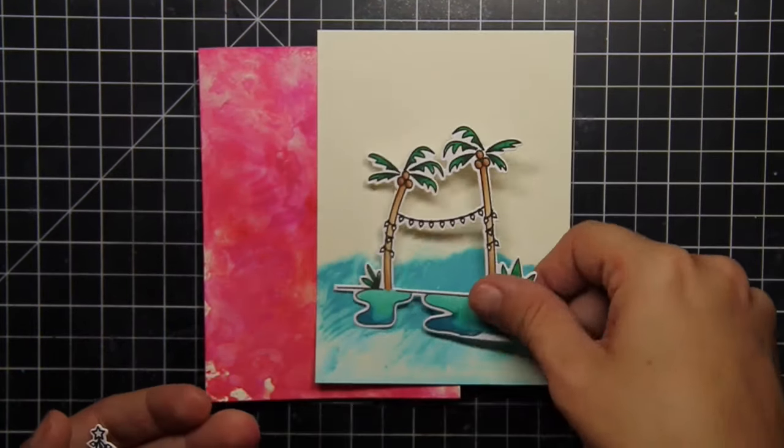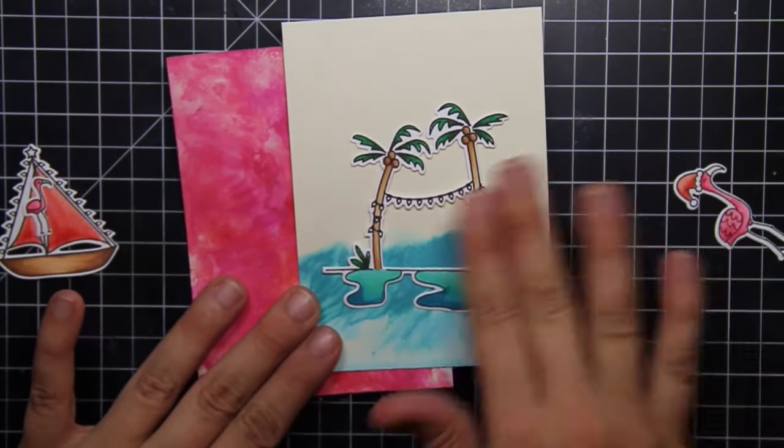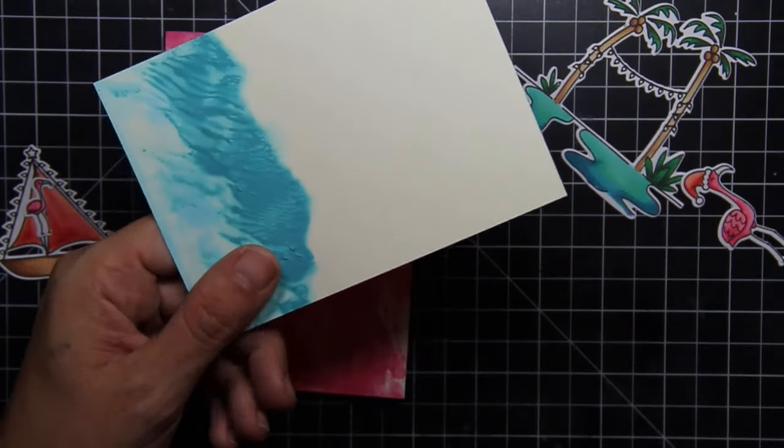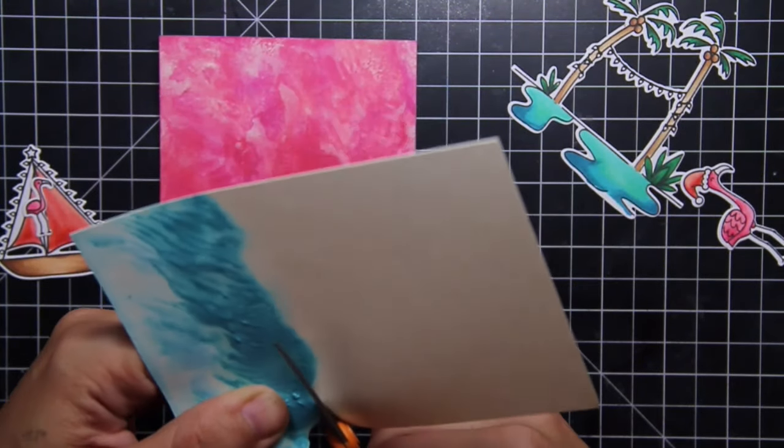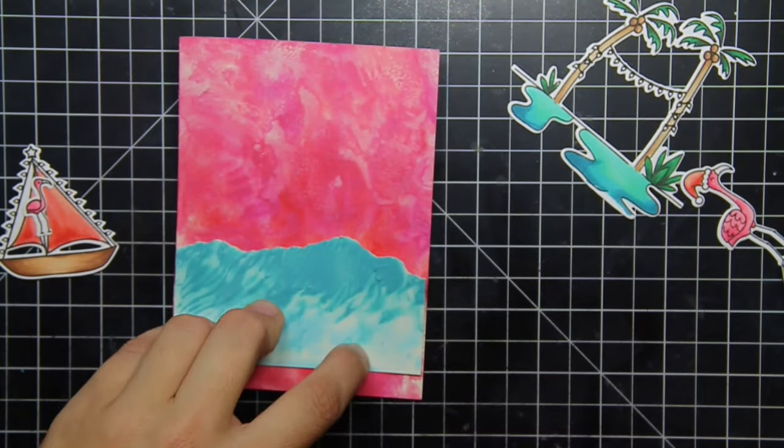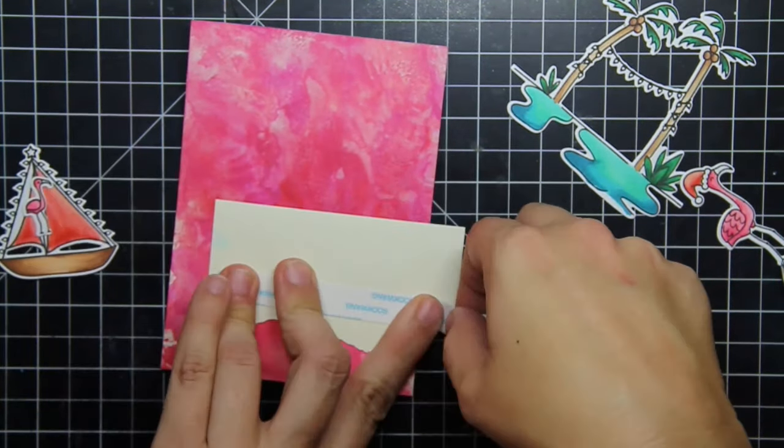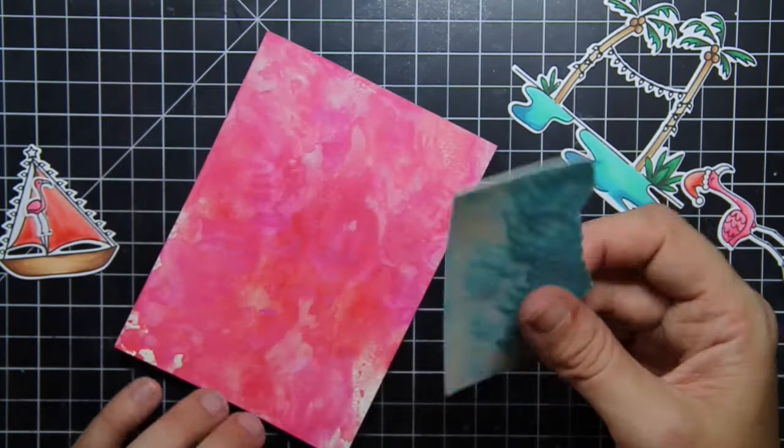So here are all the pieces I have. I've got the tiny flamingo, the big flamingo, the ocean waves, the palm trees, the boat, and the big pink background. I fussy cut out the waves. Yes, I fussy cut out the waves. As much as I hate fussy cutting it was the right choice to do here because I think the waves have a nice textural view.